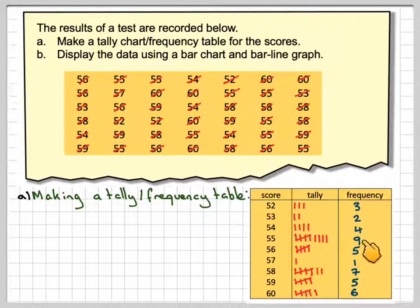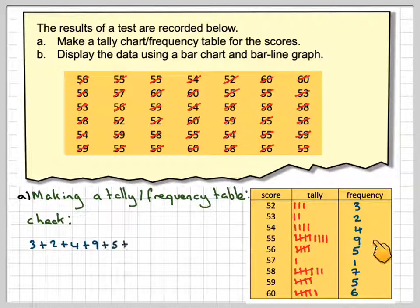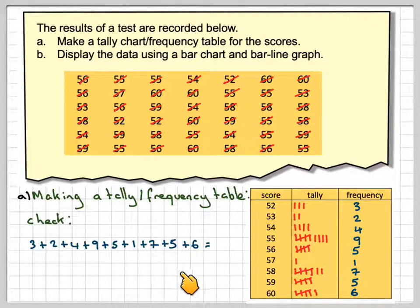What we should just do is add these up, just to do a little check here, that three plus two, plus four, plus nine, plus five, plus one, plus seven, plus five, plus six, that's equal to 42. And we can see we have seven here and six here. So seven times six is 42 altogether. We should just make sure that your frequency do add up to the original data.